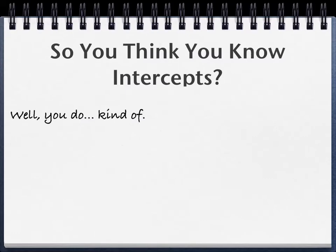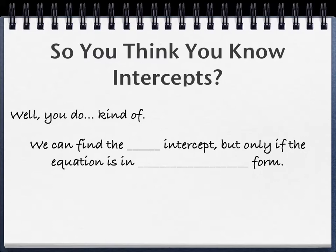You do already know a little bit about intercepts — you at least know what they are, and you know how to find them sometimes in certain situations. What we have talked about so far is the y-intercept specifically, and you can find the y-intercept as long as the equation is written in slope-intercept form, which is that y equals mx plus b form, because then you know that the y-intercept is just that b value. So if I hand you an equation that's written in slope-intercept form, I'm pretty confident all of you can find the y-intercept.